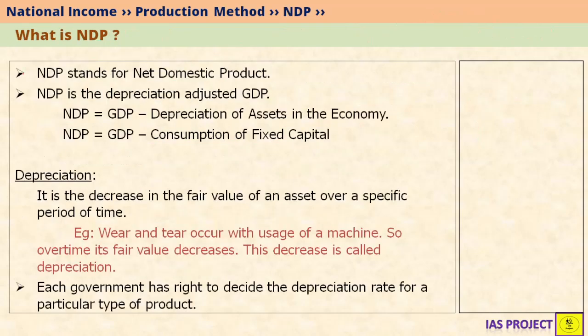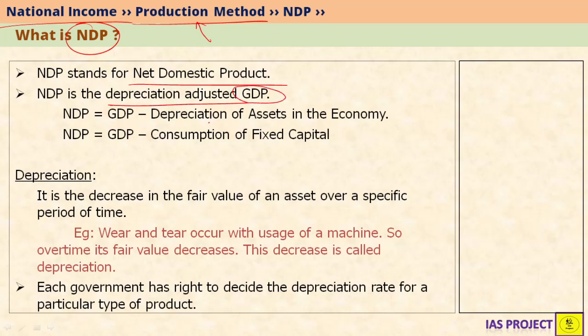Now let's look at what NDP is. NDP, or Net Domestic Product, is again a measure of national income using the production method. Net Domestic Product is nothing but depreciation-adjusted GDP. If you remove depreciation from GDP, you get NDP. Depreciation is also called consumption of fixed capital, so GDP minus consumption of fixed capital, or GDP minus depreciation, both mean the same thing — NDP.